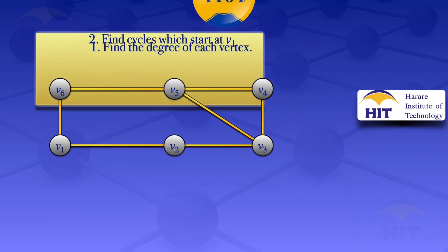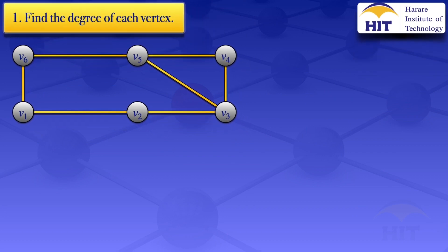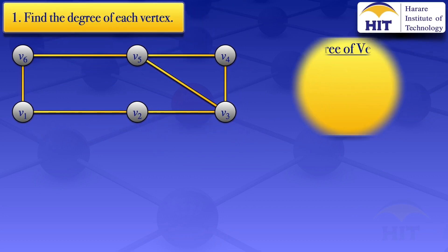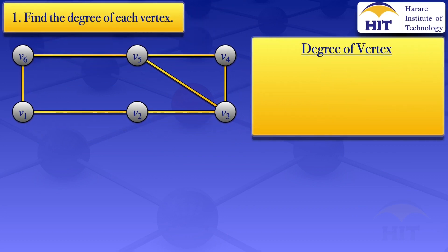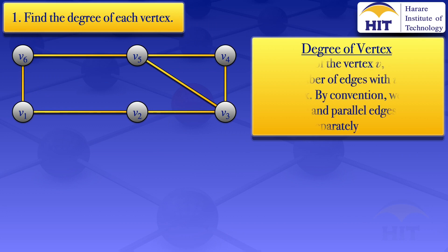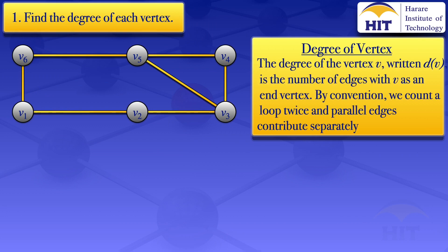To find the degree of each of the vertices, I'll look at the definition of the degree of a vertex. The degree of a vertex v, which we denote by dv, is the number of edges with v as an end vertex. By convention, we count a loop twice and parallel edges contribute separately. In this case, we are just having a simple graph — we don't have a loop or parallel edges.